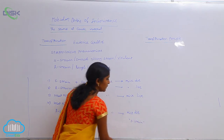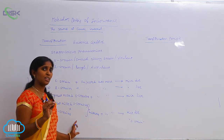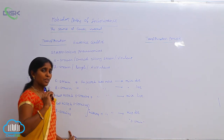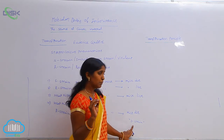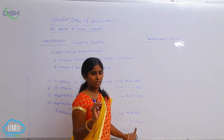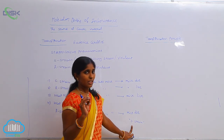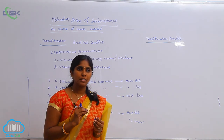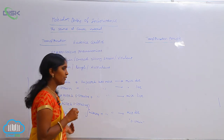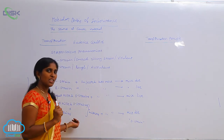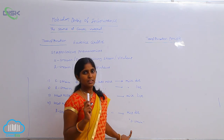Notably, live S strains were not directly introduced in the fourth stage — only heat-killed S strains were used. Yet after the death of the mice, S strains were recovered from the dead body. This means the R strain had completely transformed into the S strain. Griffith concluded that transformation had occurred: the avirulent R strain was converted into the virulent S strain.